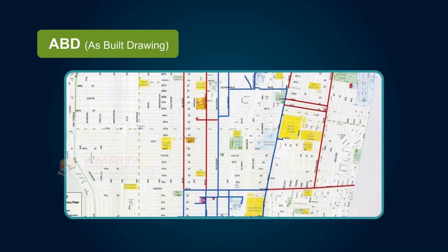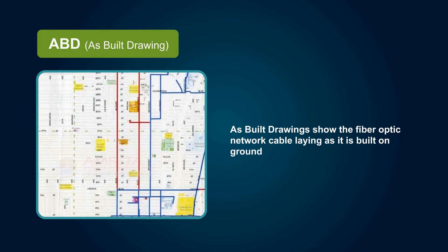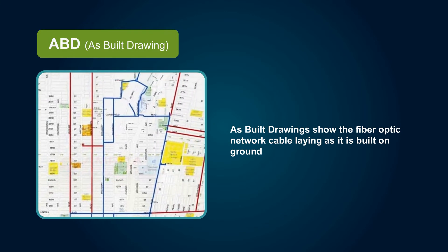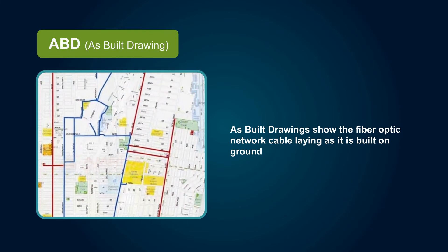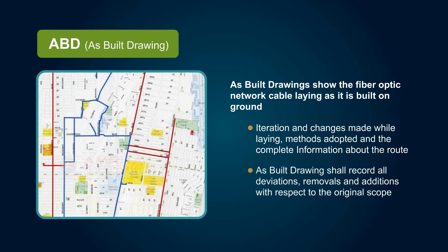ABD, or as built drawing. As built drawings show the fibre optic network cable laying as it is built on ground — for example, the number of chambers laid and their location, the iterations and changes made while laying, methods adopted, and the complete information about the route. It is prepared at the end of the installation. As built drawing shall record all deviations, removals, and additions with respect to the original scope.